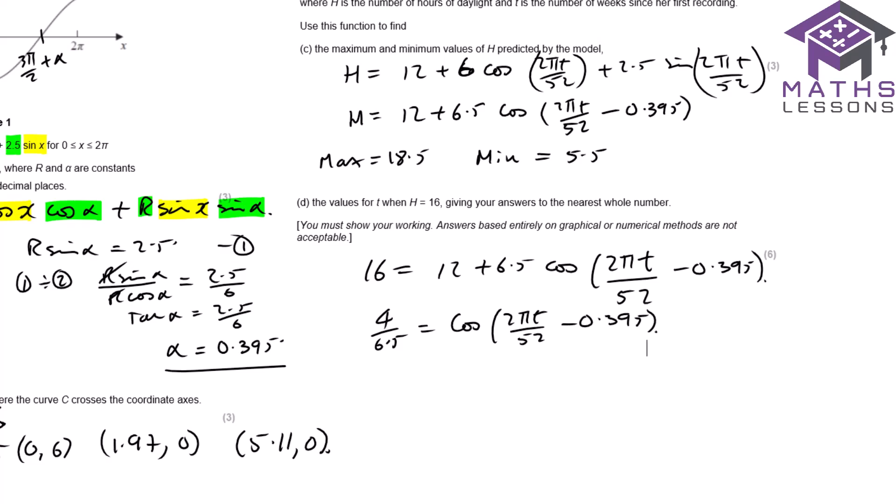So what we do is we work out inverse cos of this, and we get 0.91 equals 2 pi t over 52 minus 0.395. Now at the point where we do the inverse cos, we've got to work out the other values. So we had this value at 0.91. So this one here is going to be 2 pi minus 0.91. So we've also got 2 pi minus 0.91 equals all of that. And you've got to calculate both of those.